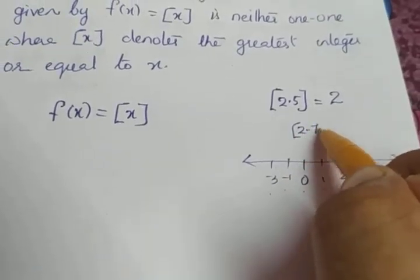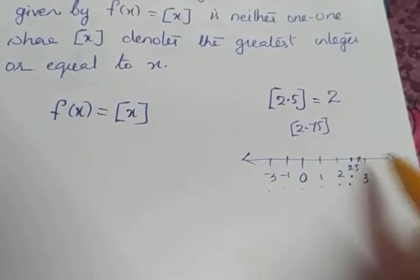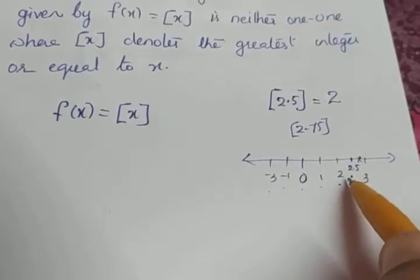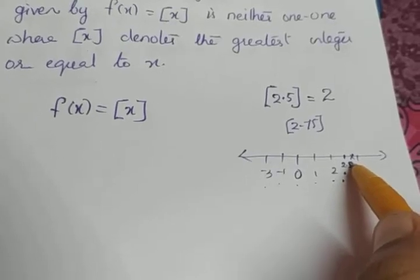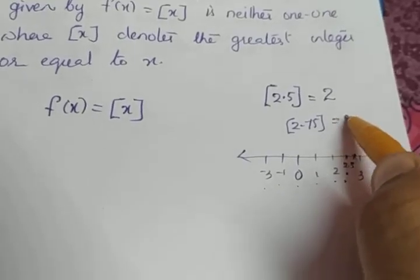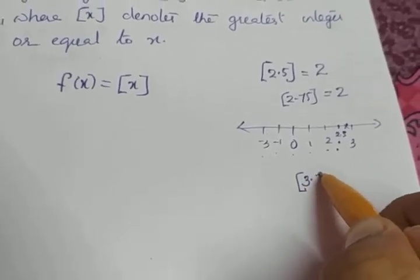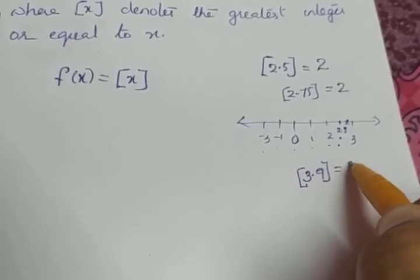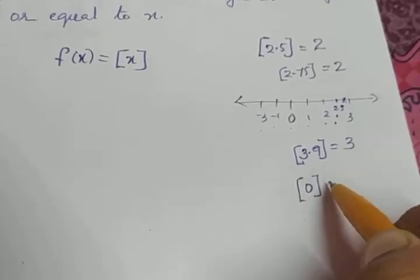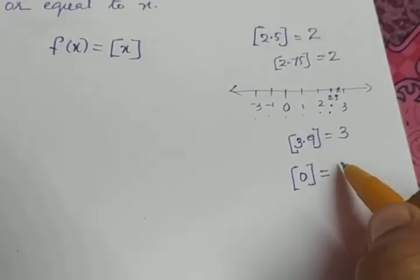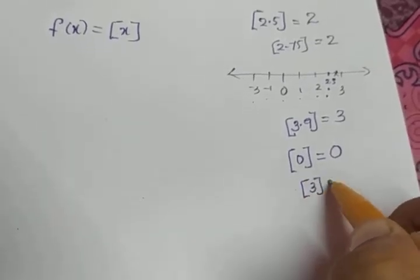If I take 2.75, it also lies between 2 and 3, so the greatest integer less than 2.75 is also 2. Similarly, ⌊3.9⌋ = 3. And ⌊0⌋ = 0 itself, and ⌊3⌋ = 3 itself.